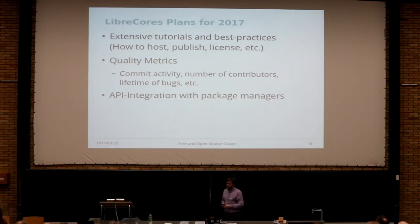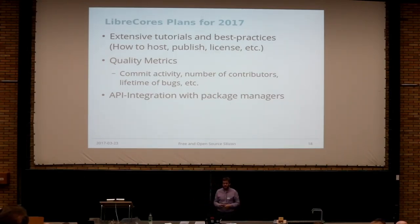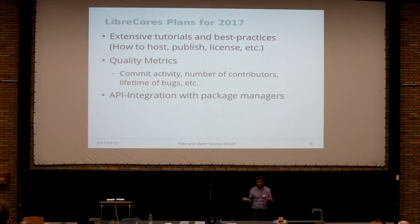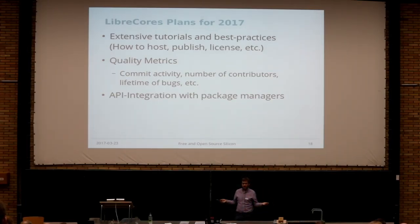Those are the plans for the team. We're ramping up, attracting projects, bringing up extensive tutorials on how to build your code, how to develop — development flows should get a more modern touch. People are still used to ClearCase and CVS and stuff like that. They should learn how collaboration in a worldwide community works. We're giving some guidance on licenses. And our main focus is on quality metrics: you want to see the commit activity, how often did it get changed, how many people are contributing to it? If it's only one, you should have a closer look. If it's 20 people constantly contributing, it's probably something very healthy. How long do bugs live there? There are bugs that have lived there for six years.